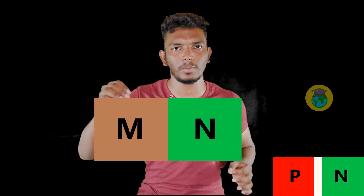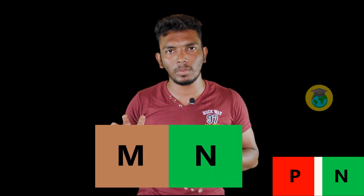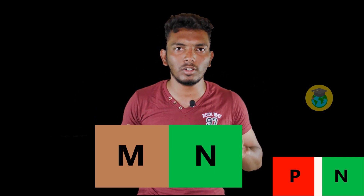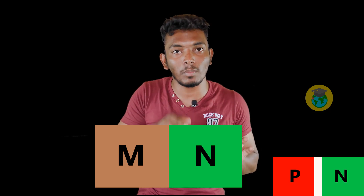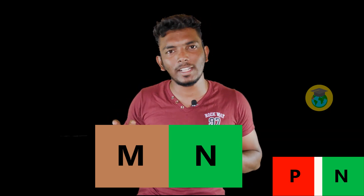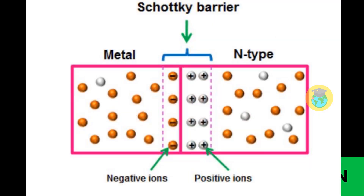Now we will look at a metal-semiconductor diode. In a metal-semiconductor diode, we have an N-type semiconductor. In the metal there are free electrons, and in the N-type semiconductor there are also free electrons. The majority carriers are electrons, and minority carriers are positive holes.